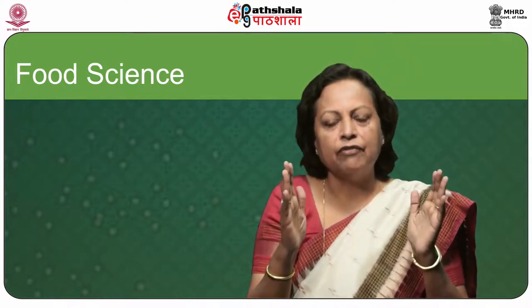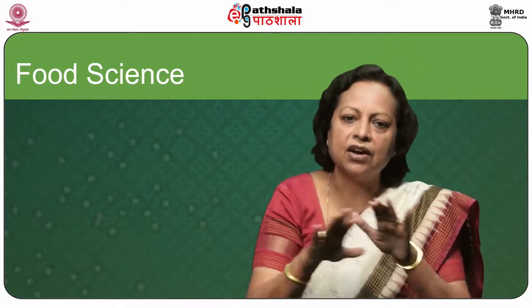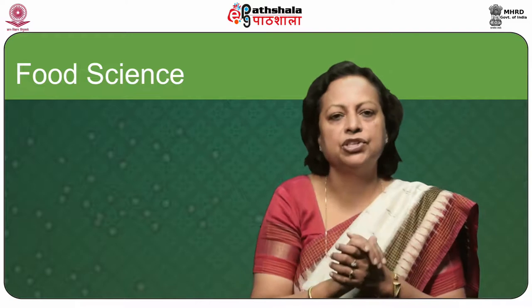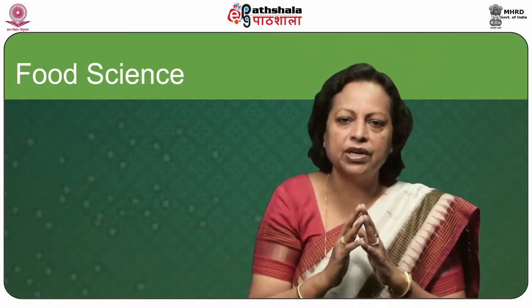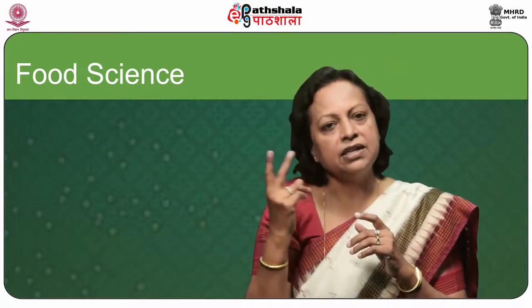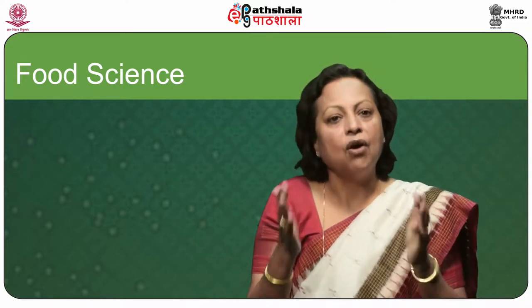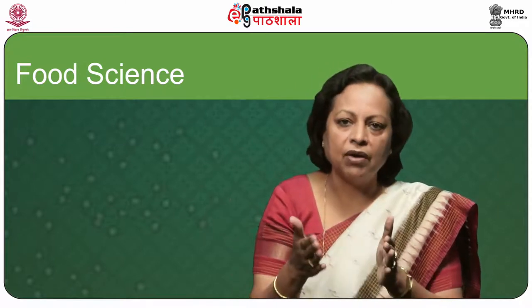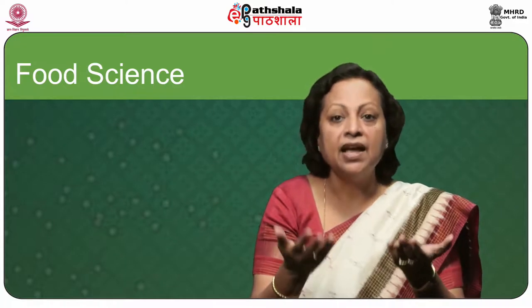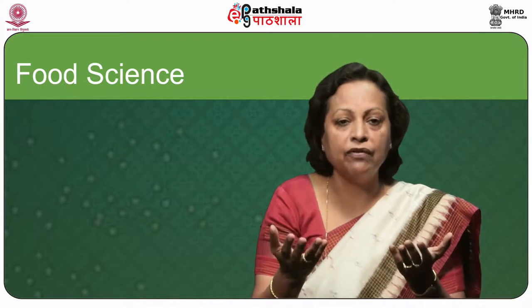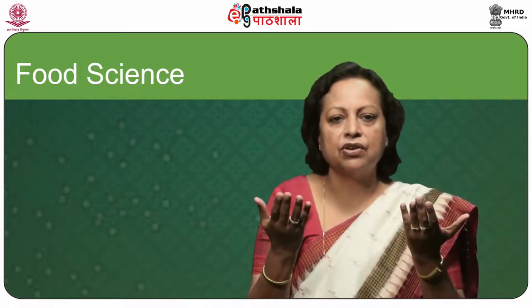Desiccated coconut is prepared from the white coconut kernel after removing its brown testa, shredding, and drying in a hot air dryer to below 2% moisture. Coconut sap obtained by tapping the stalk of young flower bunches is a rich source of sucrose and ascorbic acid. In fresh state it is called sweet toddy or neera. On standing, fermentation takes place and about 4% alcohol develops. It is further distilled to produce arrack with an alcohol percentage of 35. Jaggery is also obtained from evaporation and concentration of coconut sap.